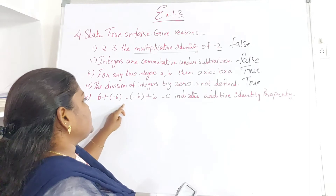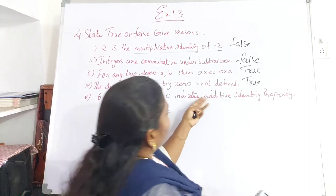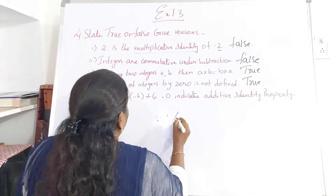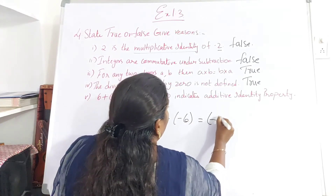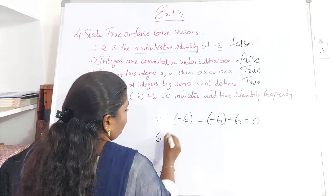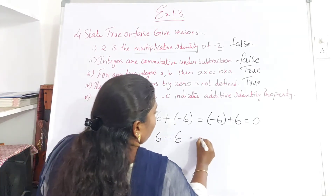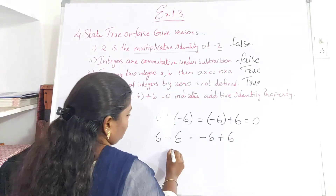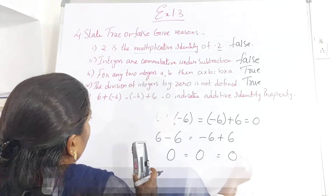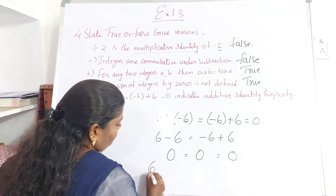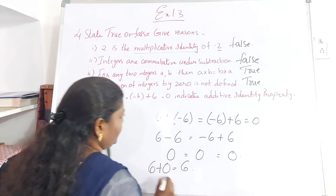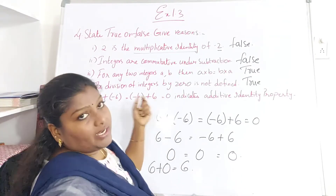The next one: 6 + (minus 6) = minus 6 + 6 = 0 indicates the additive identity property. Let us check: 6 plus minus 6 gives 6 minus 6, which is 0. And minus 6 plus 6 is also 0. Now, the additive identity means any number added to 0 gives the same number — so the additive identity is 0. However, what we have here is the additive inverse property, not the additive identity property. So this statement is false.